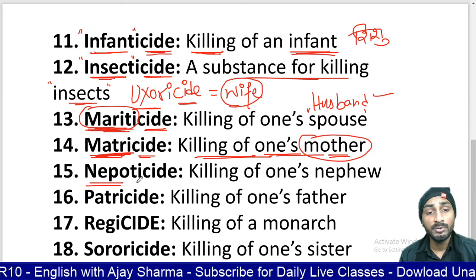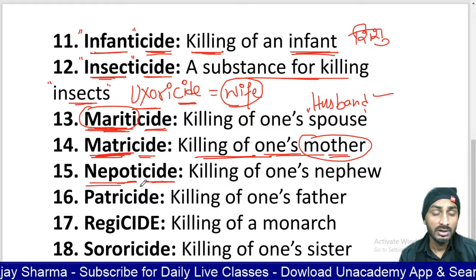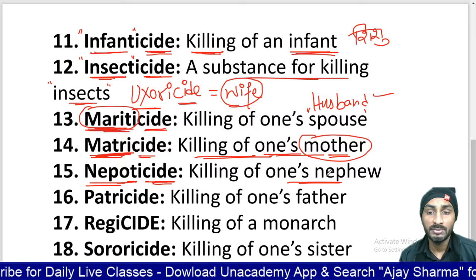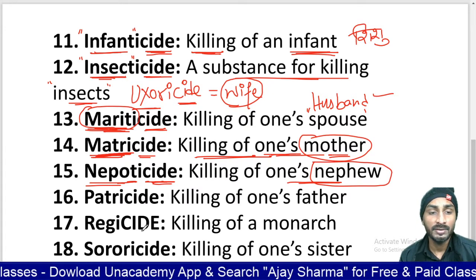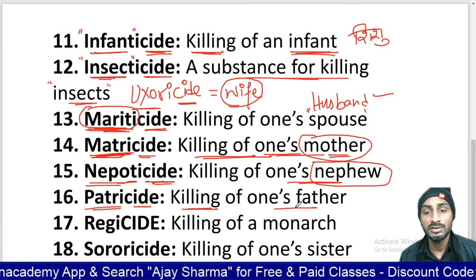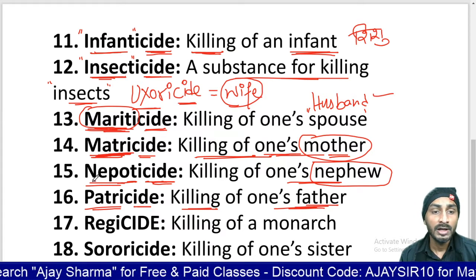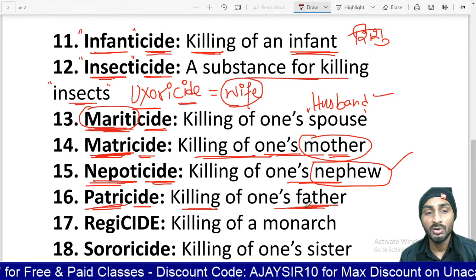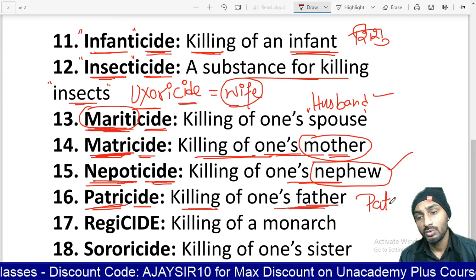Next is nepoticide. Nepoticide means killing of one's nephew. After that, patricide — patricide means killing of one's father. 'Nepoti' is the root for nephew, and 'patri' is the root for father. As you know, 'pater' — P-A-T-E-R — is a root related to father.